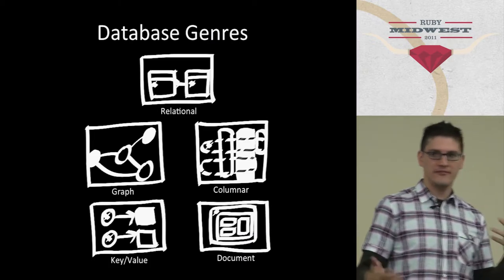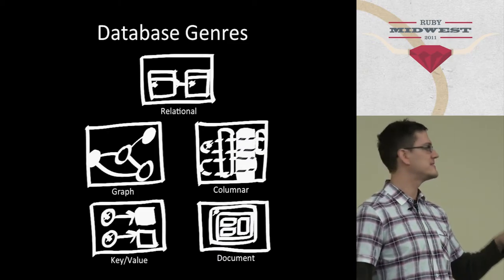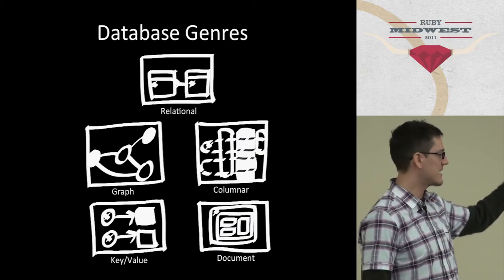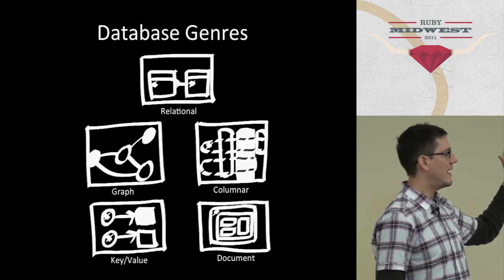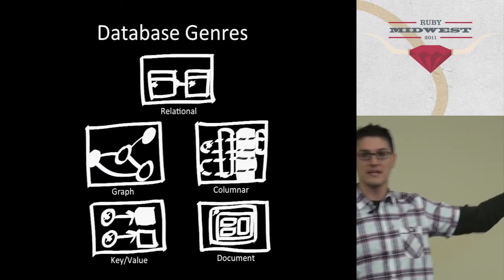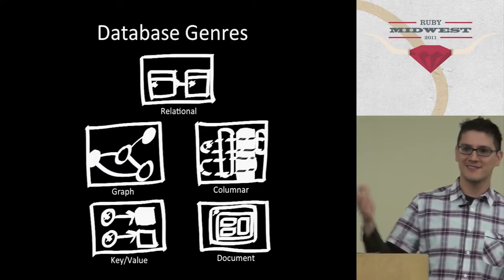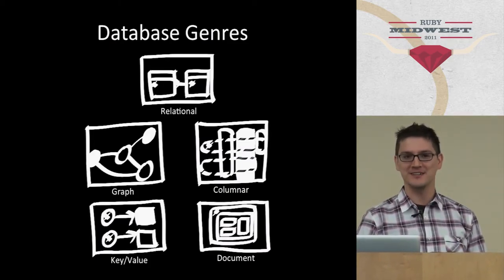If you've ever listened to or read anything about NoSQL databases, you'll hear about the big four: graph databases, columnar databases, key-value, and document datastores. But I enjoy throwing in relational, so there's really five, because let's not forget the databases that all of us have been using for the past 40 years.